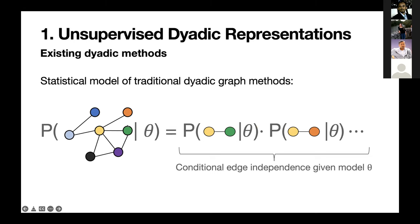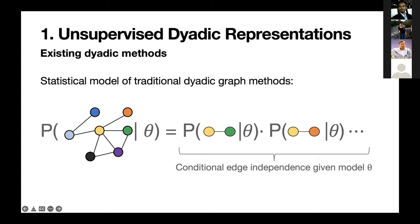The important thing is to understand how unsupervised learning on graphs actually works, especially with dyadic graphs. If you look at the loss function a method proposes and it's a sum over edges, it effectively means the edges are considered conditionally independent. All deep learning models on graphs are probabilistic models. The probability of the observed graph given the model parameters — the neural network weights — is described as the product of probabilities over the edges. Given the model, the edge probabilities are all independent.